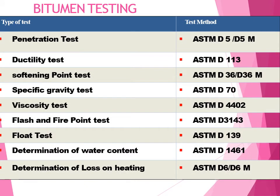Bitumen testing is based on ASTM standards as follows: Penetration test per ASTM D5, Ductility test per ASTM D113, Softening point test per ASTM D36, Specific gravity test per ASTM D70, Viscosity test per ASTM D4402, Flash and fire point test per ASTM D3143, Float test per ASTM D139, Determination of water content per ASTM D1461, and Determination of loss on heating per ASTM D6.